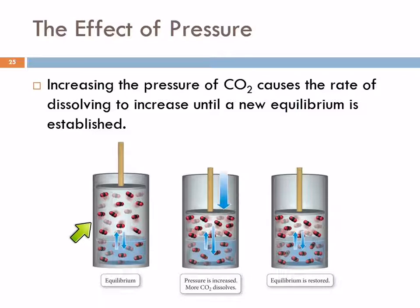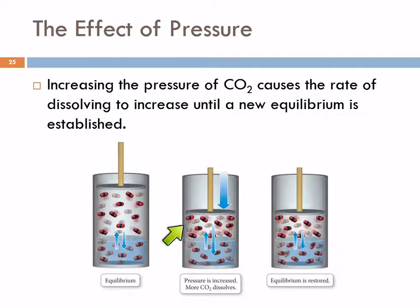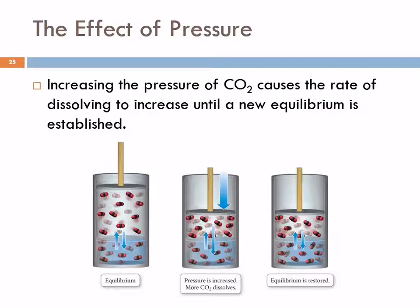We can think of this in terms of equilibrium. We've got carbon dioxide in the gas phase above the liquid, and some carbon dioxide dissolved in the water — carbon dioxide escaping from and dissolving into the water. This is at equilibrium. When we increase the pressure by decreasing the volume of that head space, the concentration of carbon dioxide in the gas state is higher, the pressure is higher, there are more particles per unit volume. That increases the rate of the carbon dioxide dissolving in the water, and this increased dissolving will continue until the rates of dissolving and escaping are equal again.